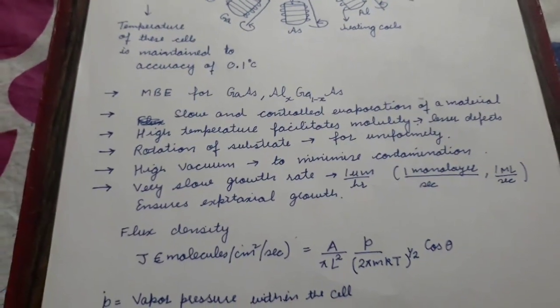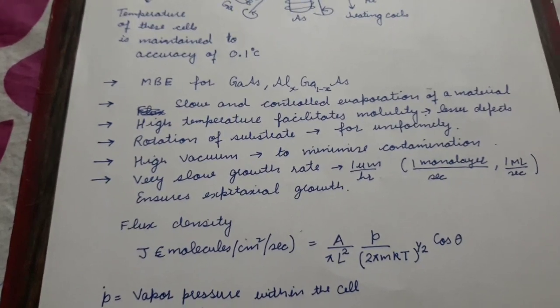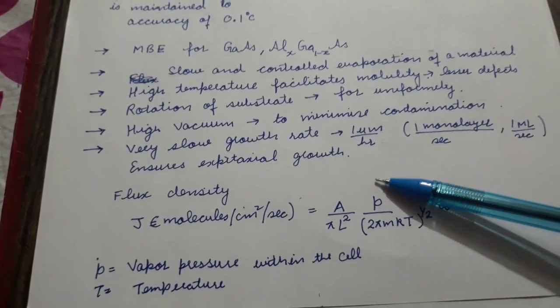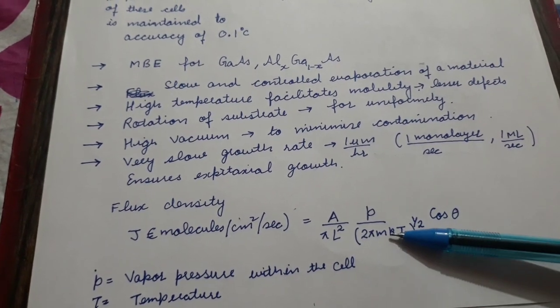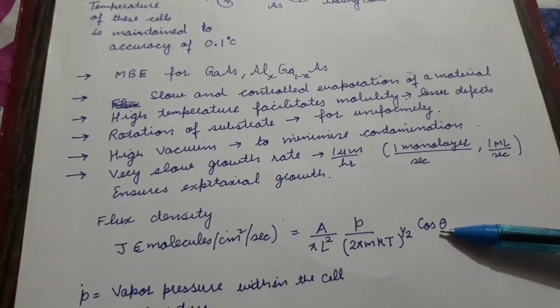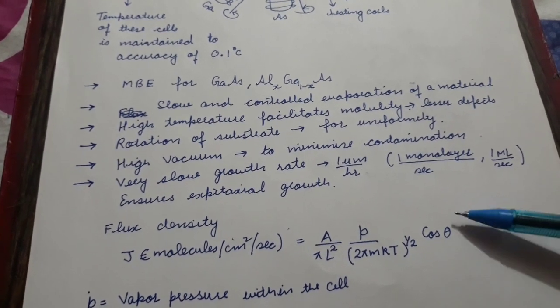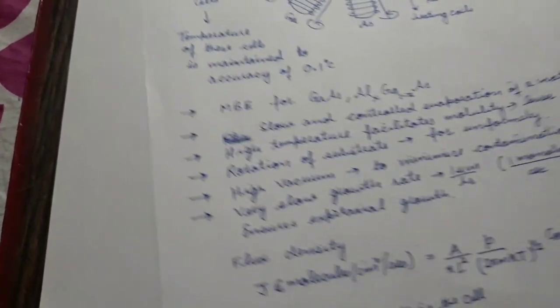The flux density, which is number of molecules per centimeter square per second falling on the substrate, will be given by this relation where A is the surface area, P is the vapor pressure within the cell, T is the temperature, K is Boltzmann's constant. Theta is the angle between the perpendicular to the surface and the angle at which the ions or atoms are incident on the substrate.